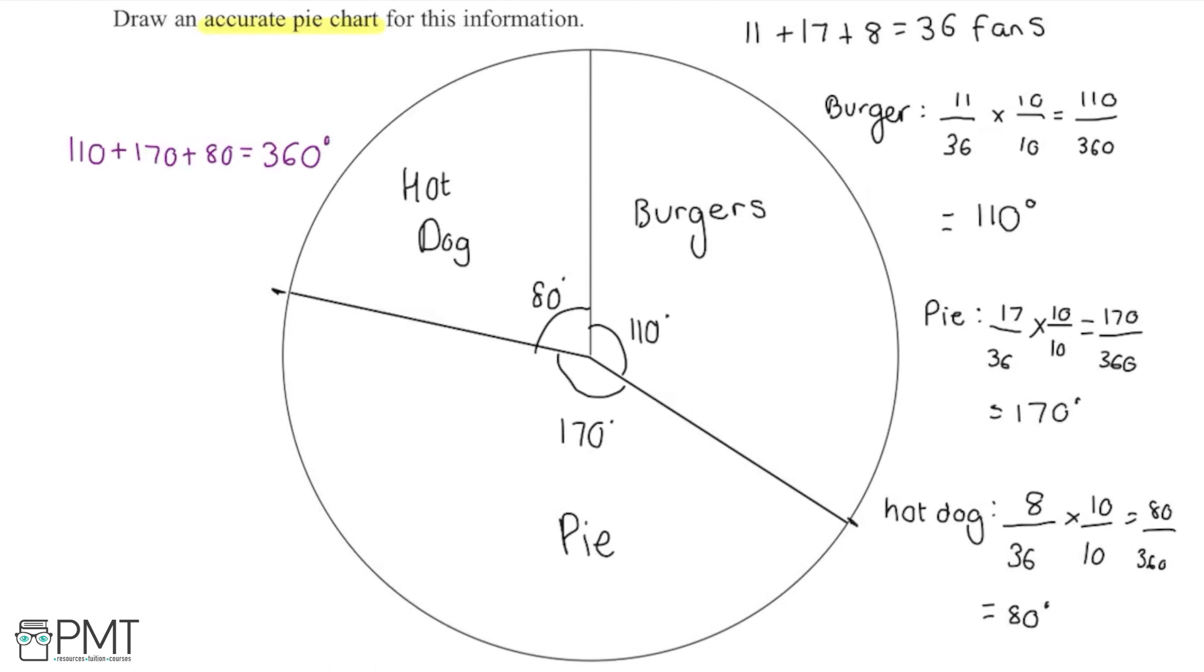And that brings me to the end of this question. So as for how the three marks are awarded here, you'd get the first mark for finding one of the angles and the second mark for finding and calculating all three of the angles or having one drawn accurately. And then the third mark is for this fully correct and labelled pie chart at the end.